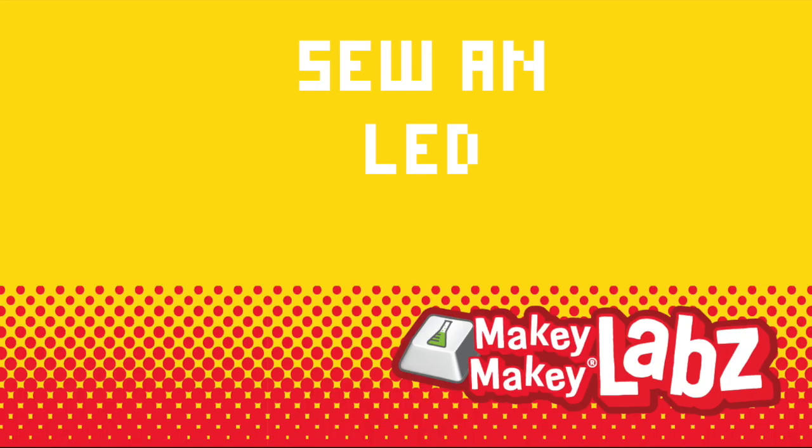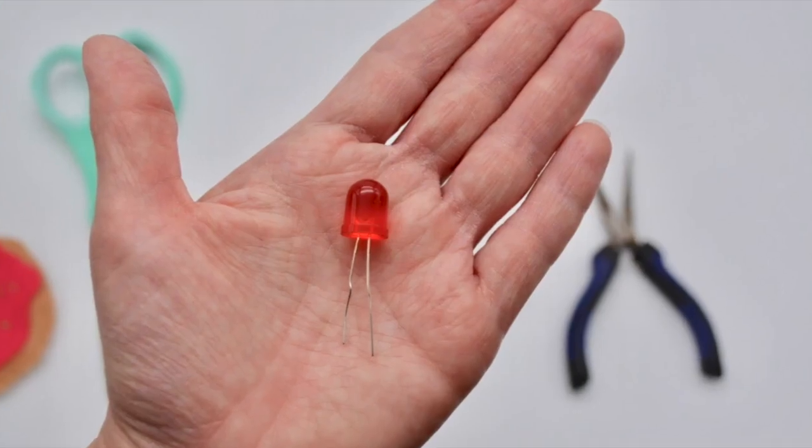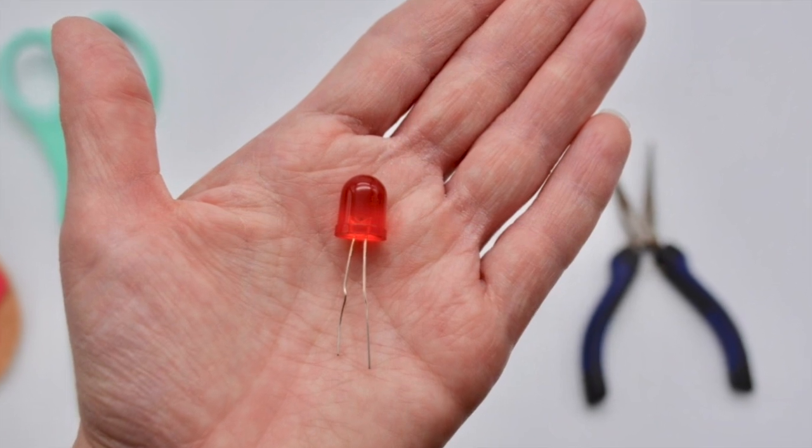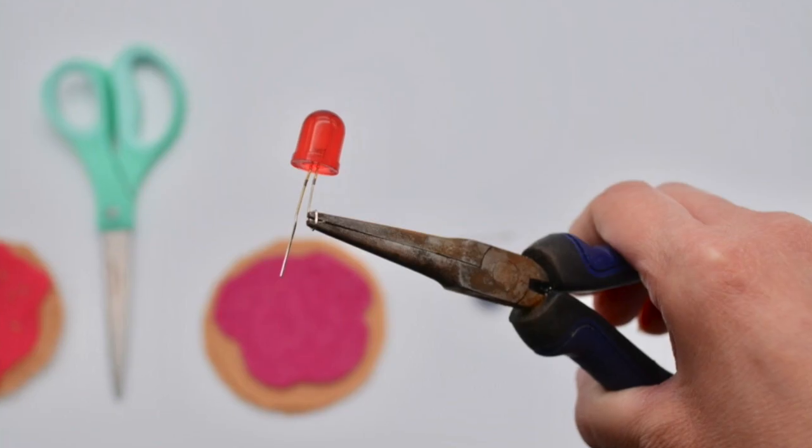Now let's sew an LED to a donut so that we can either alligator clip it to a battery pack or our Makey Makey. First, determine the polarity. Find the longer leg. That's the positive leg.